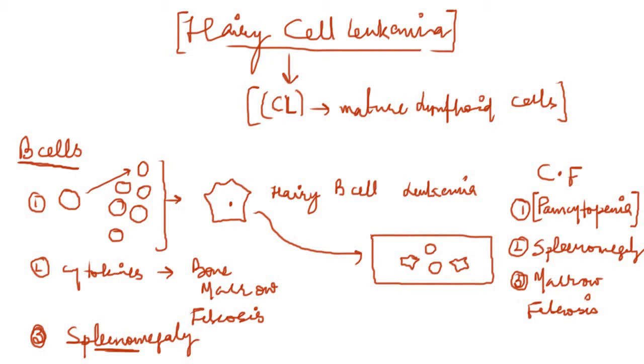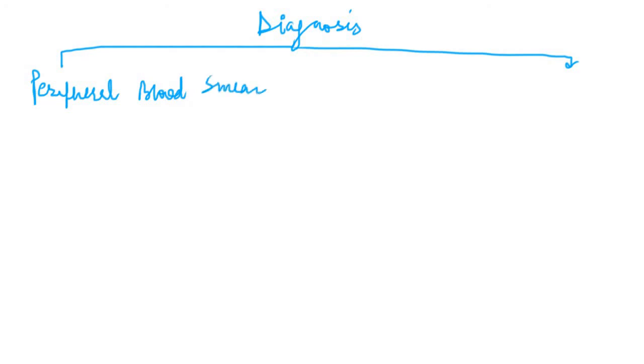Now let's talk about how do we diagnose the hairy cell leukemias. If we talk about the diagnosis of hairy cell leukemia, there are mainly two things which can make the diagnosis easier. Number one, we have the peripheral blood smear. So in the peripheral blood smear, as I already told you, we'll see special lymphocytes which are called as the hairy cells and these hairy cells contain special hair-like cytoplasmic processes and that's why they are called as hairy cells.